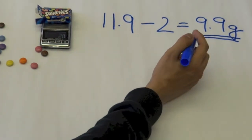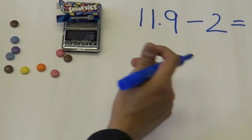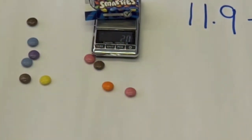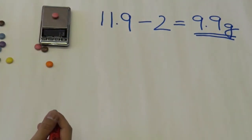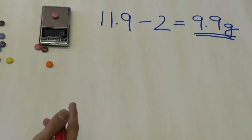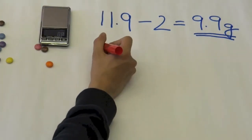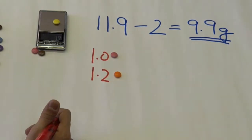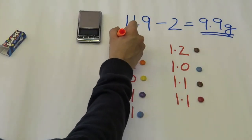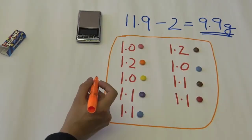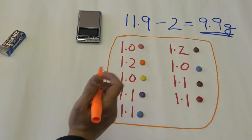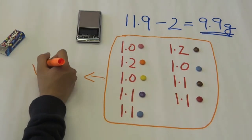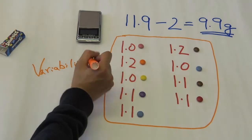Why are the Smarties not exactly 10 grams? To answer this question let's measure the weight of some individual Smarties. This Smartie weighs 1 gram. I weighed 9 different Smarties and you can see that they do not all weigh the same. This means the weight of the Smarties shows variability. So if I start filling up the box and were to aim for 10 grams, I would seldom hit the target exactly.